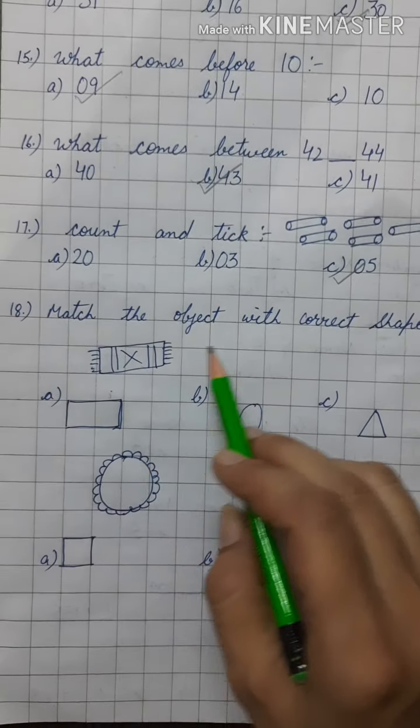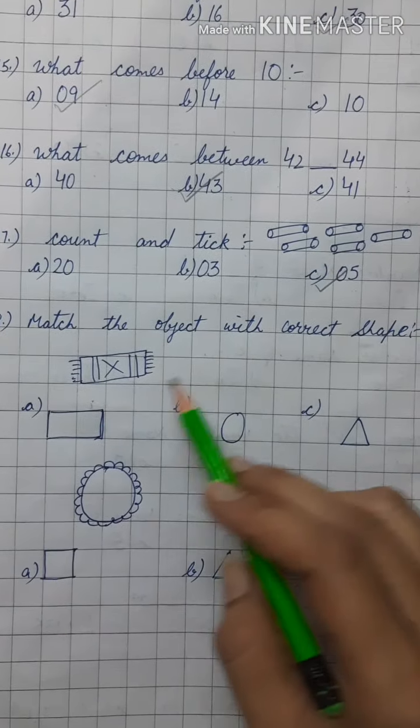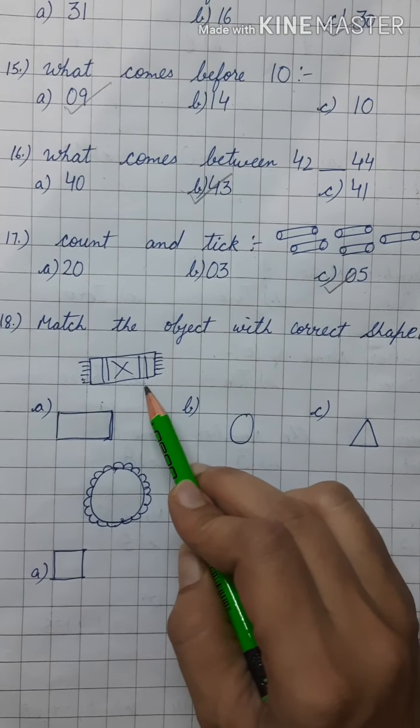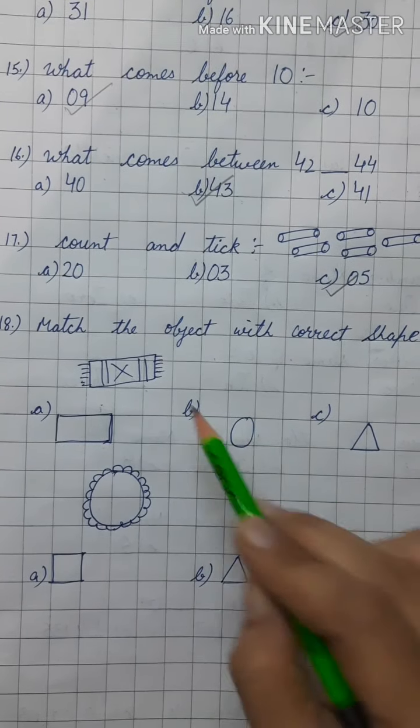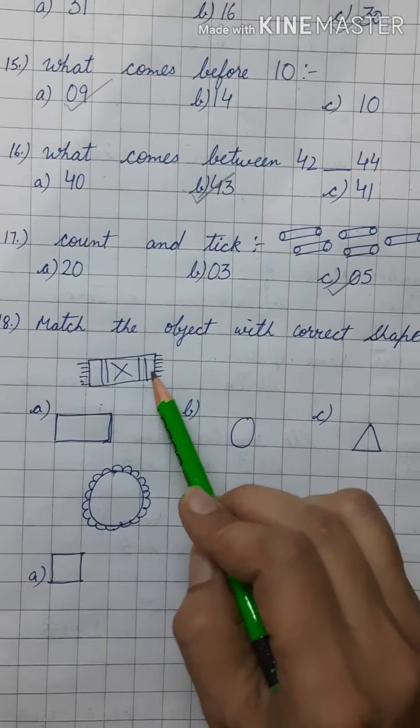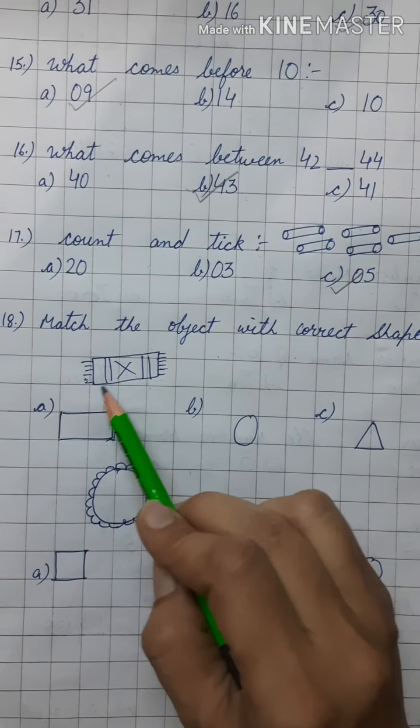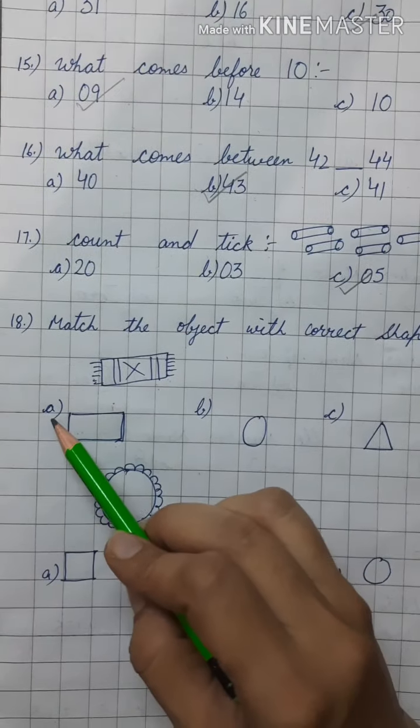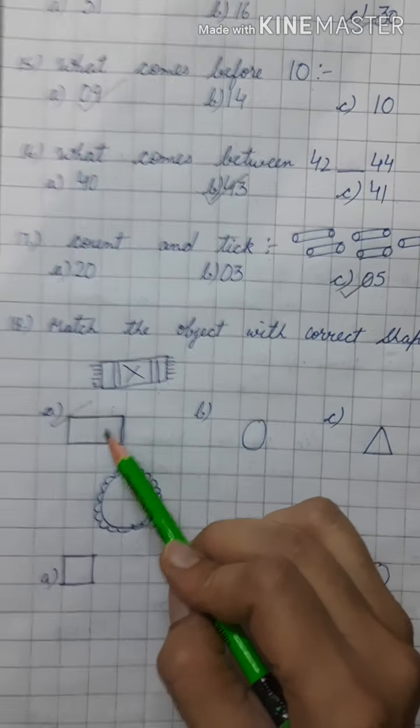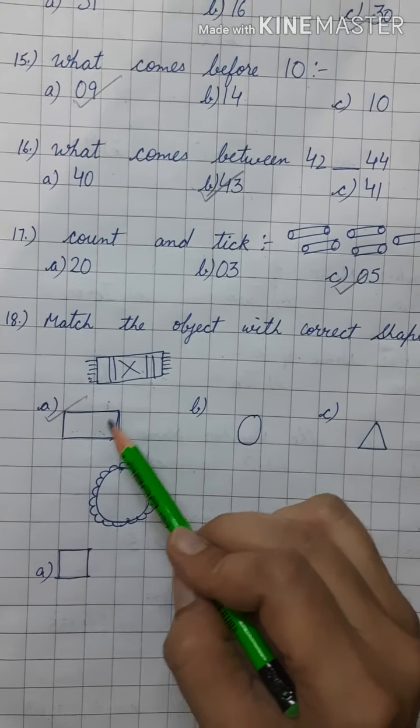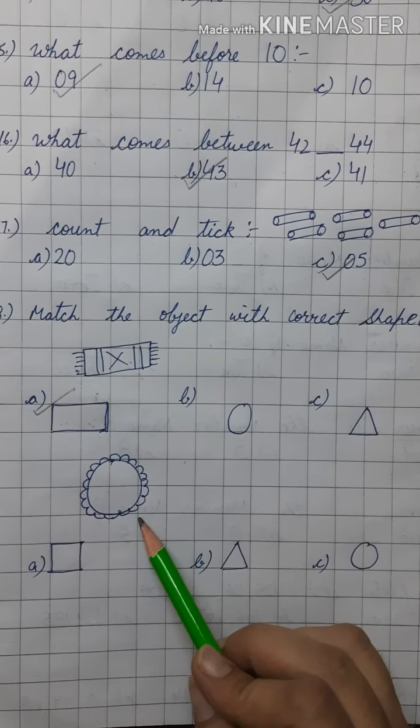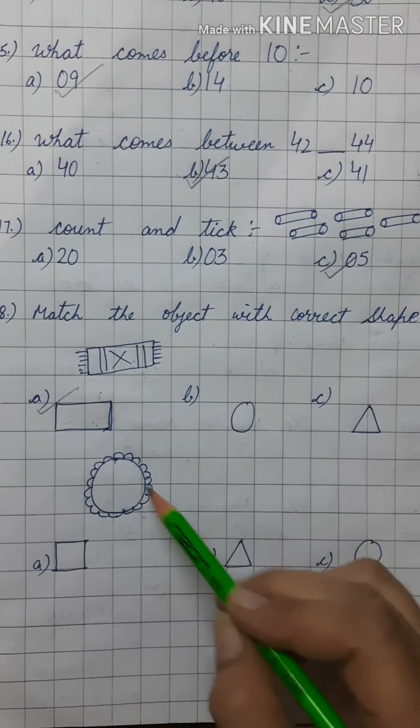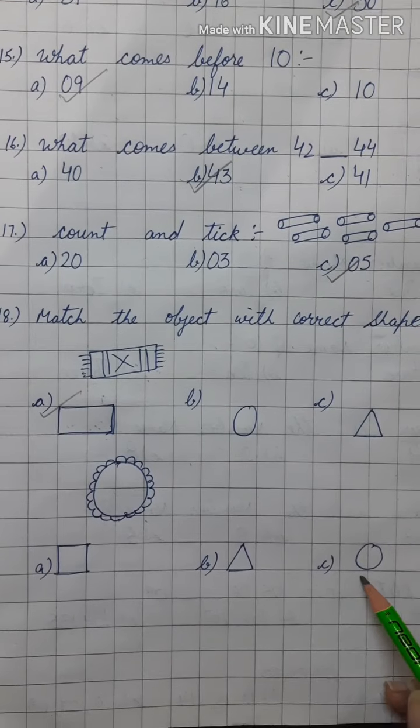Match the object with correct shape. Which shape is this? Rectangle shape. This is in rectangle shape. So we will tick the option A. This is a bangle and the shape of this bangle is circle. So where is the circle? This one.